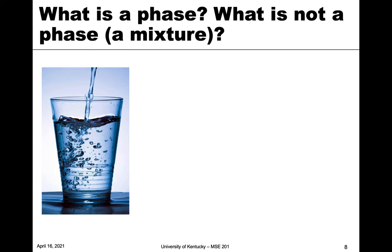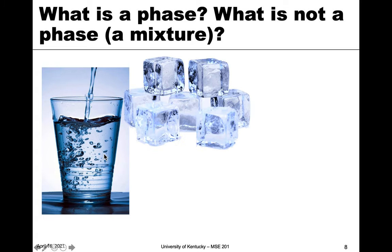Now I want to go through a series of examples you may be familiar with to see if something is a phase or not a phase. A phase means it's uniform; not a phase means it's a mixture of multiple phases. The first example is a cup of water — just the water within it. This is liquid water, a single phase. It's uniform throughout.